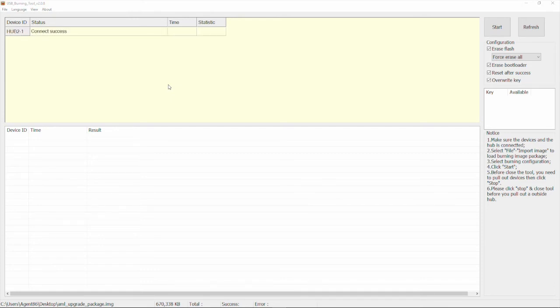I found that sometimes I'll do all the steps correct and nothing will pop up in my device ID. When that happens, just pull the power and do it over again. It should pop up the second time. Once you've successfully connected the GBOX to the USB burning tool, go ahead and press Start.